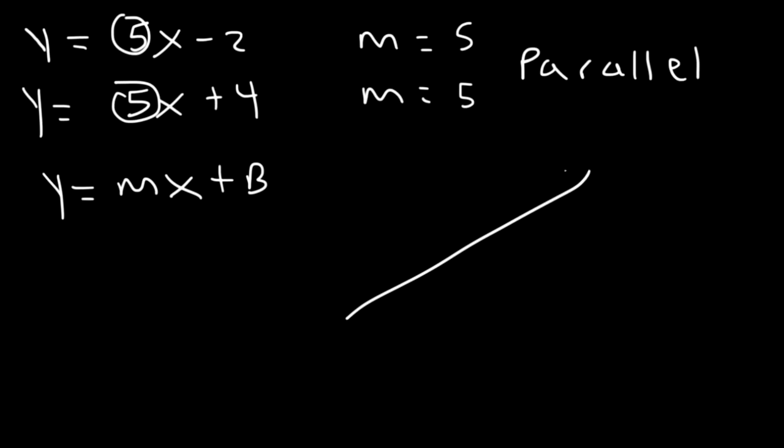For example, these two lines are parallel to each other. They have the same slope and as a result parallel lines will never intersect.